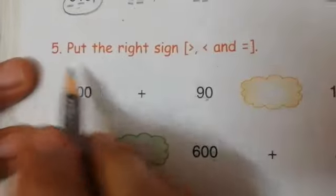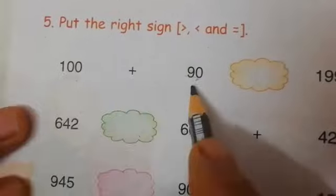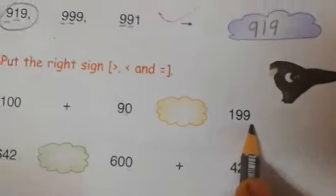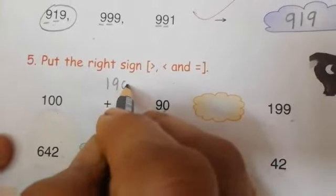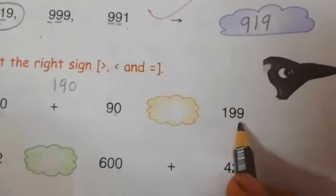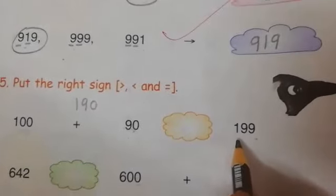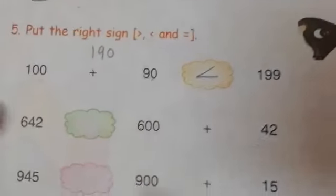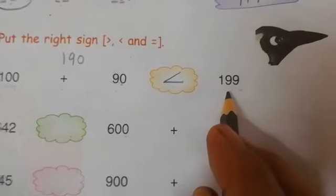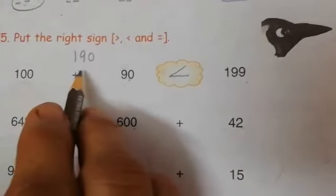Question number 5 is put the right sign: greater than, less than, and equal. 100 plus 90 and 199. Now which number is greater? 100 plus 90 means 190, and this is 199. So which number is greater? 199 is greater than 190.